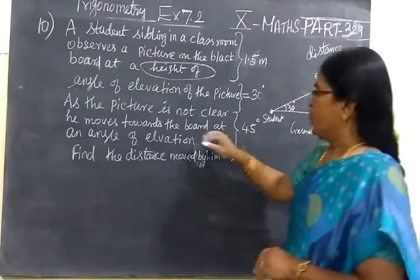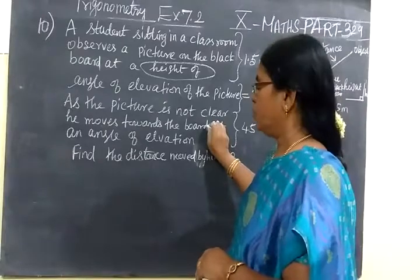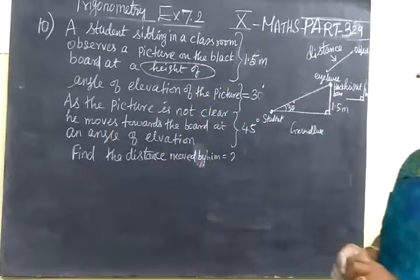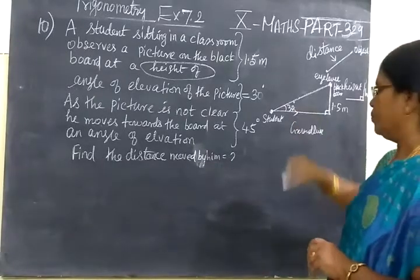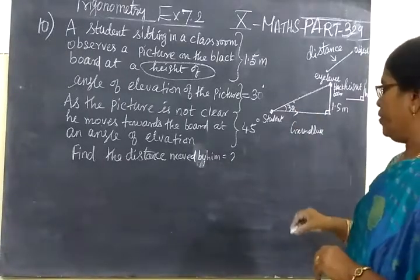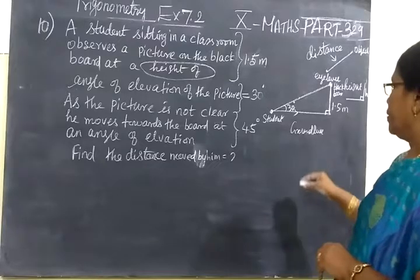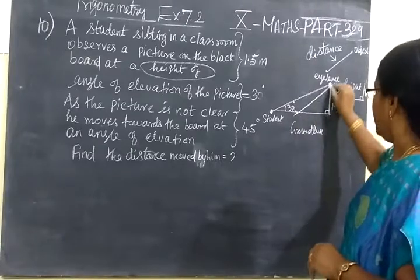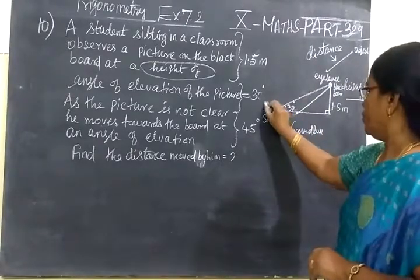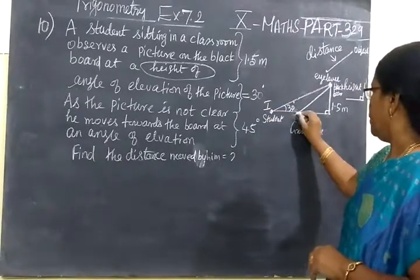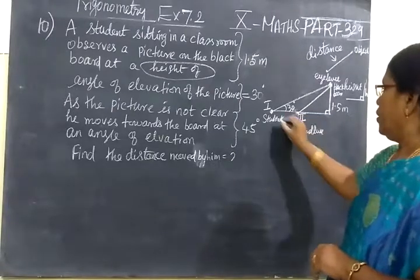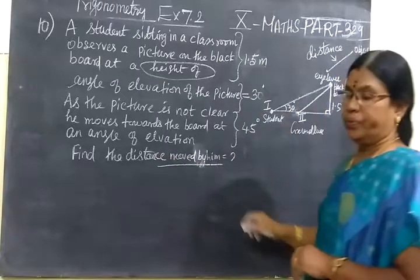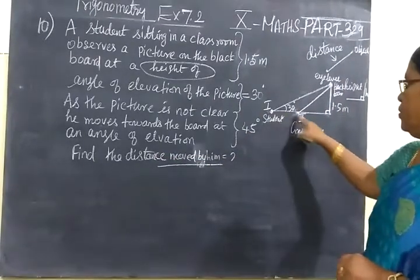Now the picture is not clear. So naturally the student moves towards the board. He is moving towards the board at an angle of elevation 45 degrees. So he is moving in this way. So he is just drawing like this. So this is first position and here this is second position. You have to find the distance moved by him. That is first position to second position.